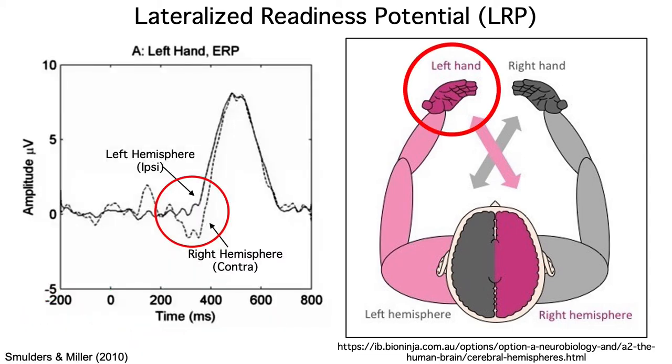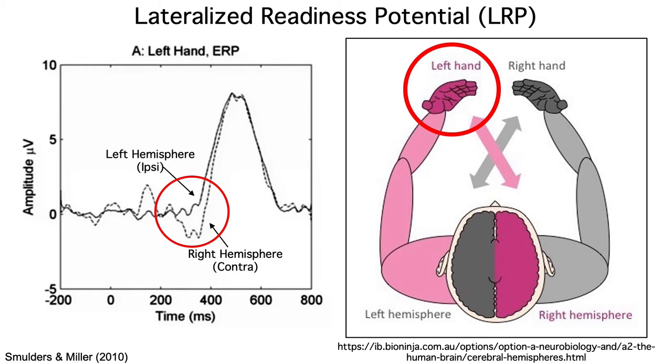When you prepare to make a left-hand response, you get a negative going voltage over the right hemisphere motor cortex. And you get the same negative going voltage over the left hemisphere when you prepare to make a right-hand response.